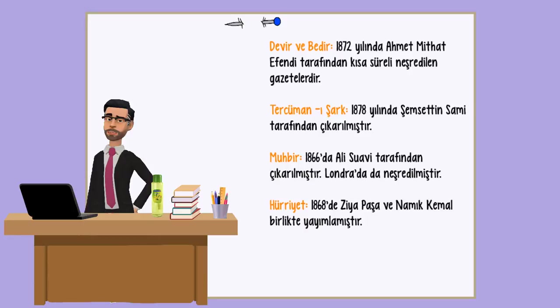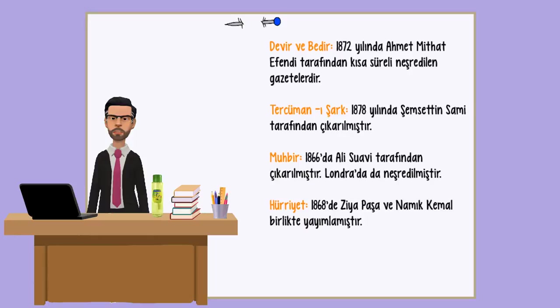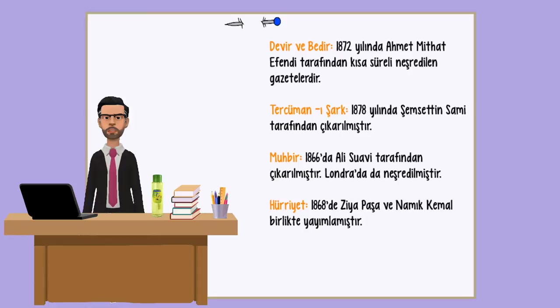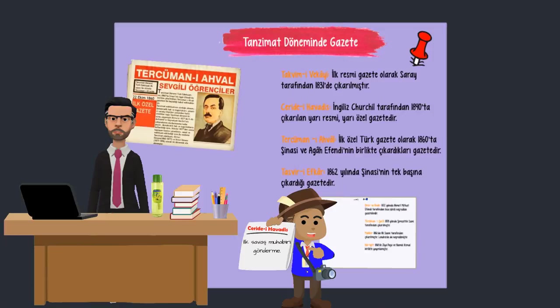Tercüman-ı Şark, 1878 yılında Şemseddin Sami tarafından çıkarılmıştır. Muhbir, 1866'da Ali Suavi tarafından çıkarılmış olup Londra'da neşredilmiştir. Hürriyet, 1868'de Ziya Paşa ve Namık Kemal'in birlikte yayınladığı gazetedir. İlk defa savaş muhabiri gönderme ise Ceride-i Havadis gazetesinde görülür.